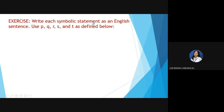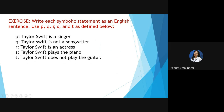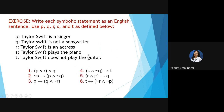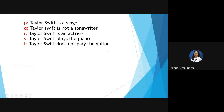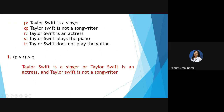Exercise: Write each symbolic statement as an English sentence. Use P, Q, R, S, and T as defined. Number 1: P ∨ (R ∧ Q). P: 'Taylor Swift is a singer,' R: 'Taylor Swift is an actress,' Q: 'Taylor Swift is not a songwriter.' Answer: 'Taylor Swift is a singer, or Taylor Swift is an actress, and Taylor Swift is not a songwriter.' Note that P and R are grouped together with parentheses.